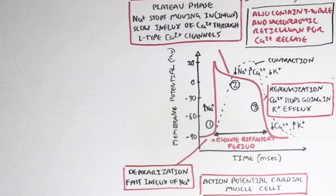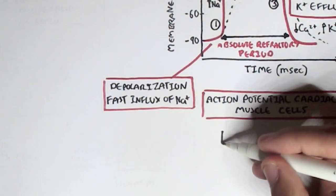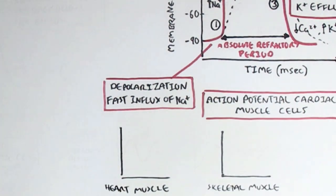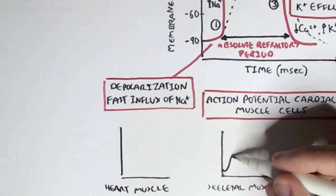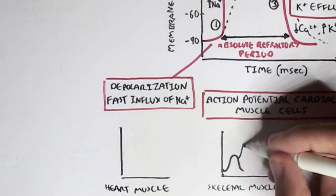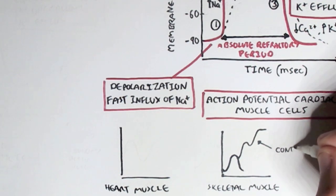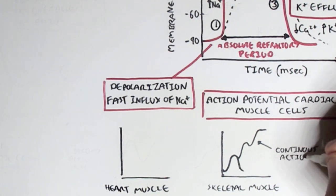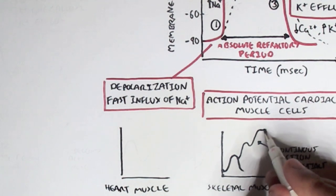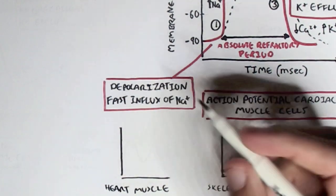To better explain this, let's look at a graph comparing what happens when a heart muscle versus a skeletal muscle receives an action potential. For a skeletal muscle, when it receives an action potential it will contract. However, a second action potential can be generated straight away, which creates a stronger contraction. This is essentially a continuous stimulation of action potentials on the muscle — action potentials can be generated before the first has finished, creating an overlapping effect until it reaches a point where the tension can no longer increase, and this point is known as tetanus.